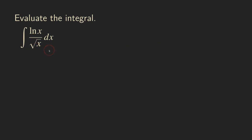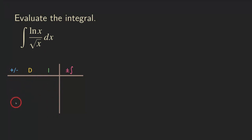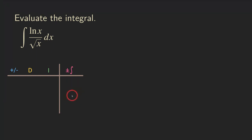We are going to set up the table to do that. The table has a sign column, a differentiation column, an integration column, and a note column for keeping track of the integral we get after performing integration by parts once — to see whether we should stop or continue.